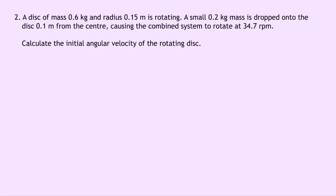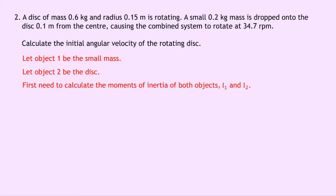Question 2 is very similar to question 1. A disk of mass 0.6 kilograms and radius 0.15 meters is rotating. A small 0.2 kilogram mass is dropped onto the disk 0.1 meters from the center, causing the combined system to rotate at 34.7 revolutions per minute. Calculate the initial angular velocity of the rotating disk. This time we're finding the initial angular velocity. Let object 1 be the small mass and let object 2 be the disk. We first need to calculate the moments of inertia of both objects.